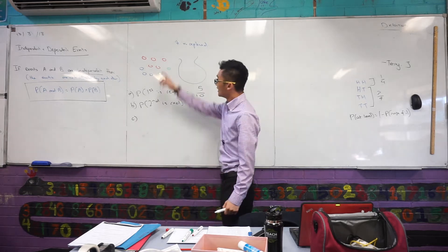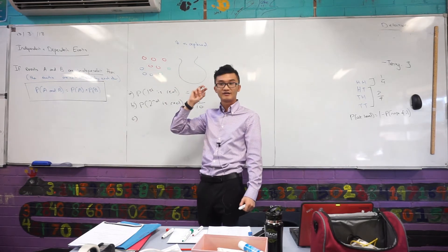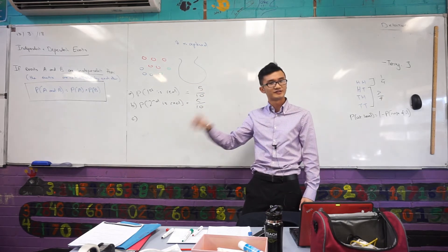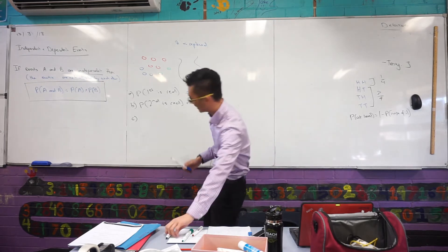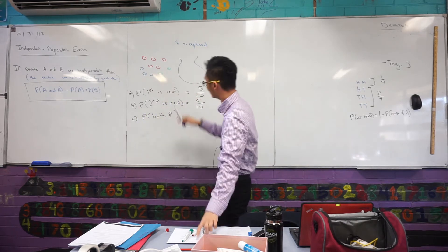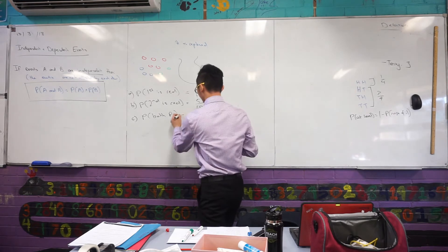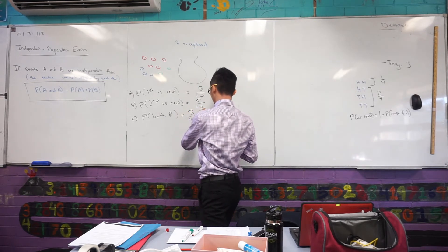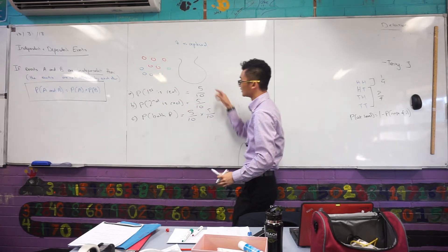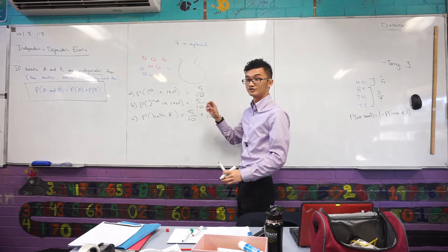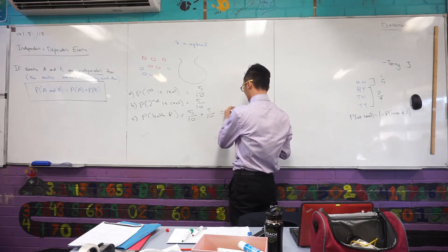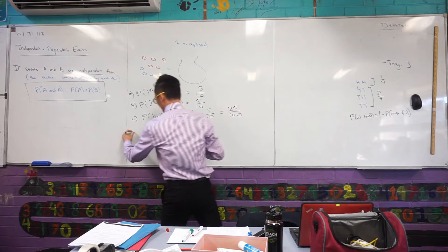So if I go back to this one, these events, they are independent, because if I take a counter out and then I just put it back in again, each time I draw, it's not affected by each other. Does that make sense? So to find the probability of both of them happening, all I have to do is just say, well, what's the probability of the first one being red? That's 5 out of 10. What's the probability of the second one being red? Also 5 out of 10. And then I just multiply them together. That's it. So if two events are independent, to find the probability of both of them happening, I just multiply those probabilities, you get 25 out of 100. Okay? Any questions about that?